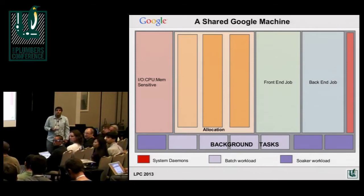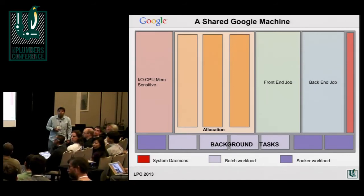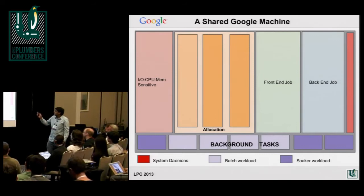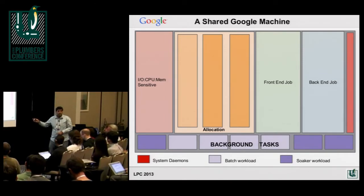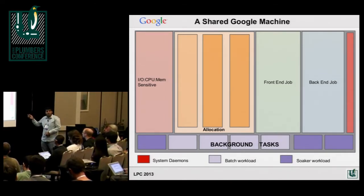On I/O control: a big chunk of I/O is reserved for jobs that are really sensitive to I/O, and we don't run too many of them on one single machine. We use block I/O priorities to manage whatever phase we need to handle for the remaining jobs.